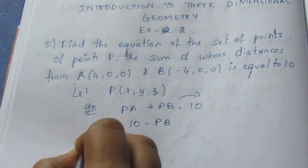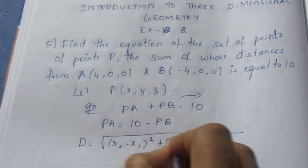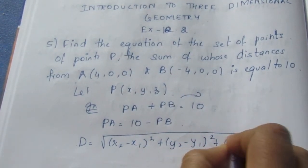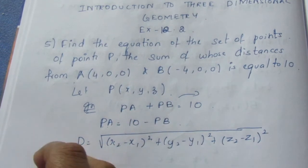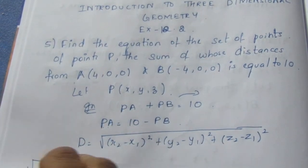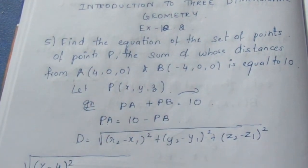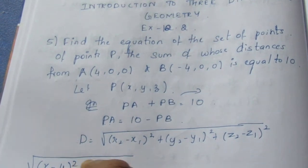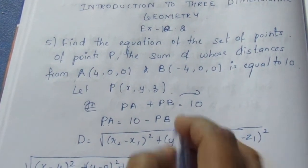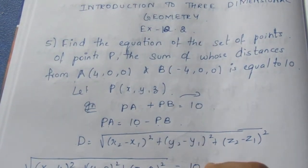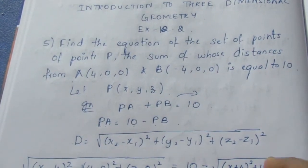The distance formula is: root of (X₂ - X₁)² + (Y₂ - Y₁)² + (Z₂ - Z₁)². Substitute the values of P and A, P and B, and 10. For PA it is root of (X - 4)² + Y² + Z², and that is equal to 10 minus root of (X + 4)² + Y² + Z².